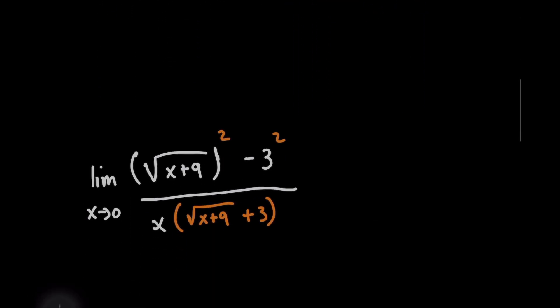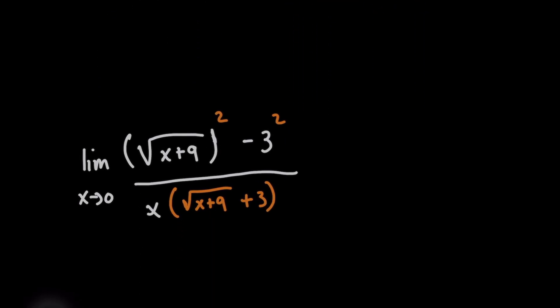And so by inspection, it's very quick now to just rewrite the numerator as the first term squared minus the second term squared.